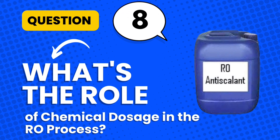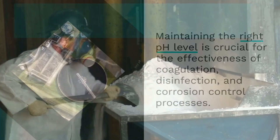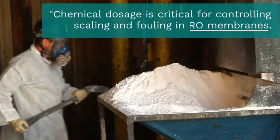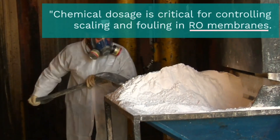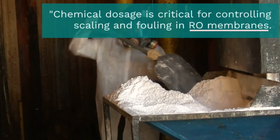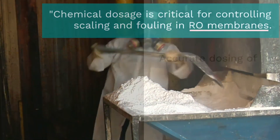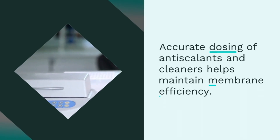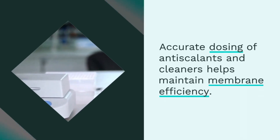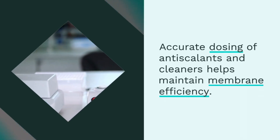Question 8: What's the role of chemical dosage in the RO process? Chemical dosage is critical for controlling scaling and fouling in RO membranes. Accurate dosing of antiscalants and cleaners helps maintain membrane efficiency.